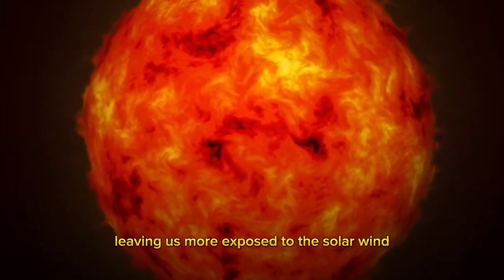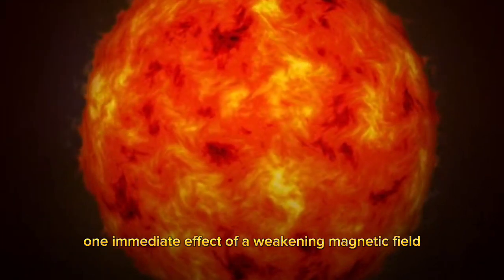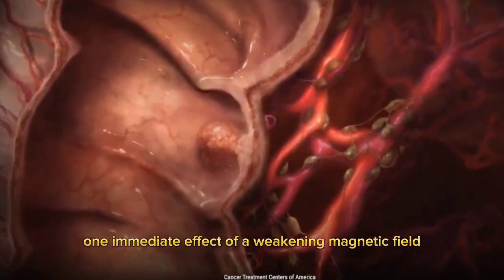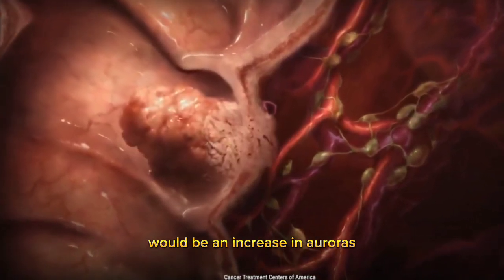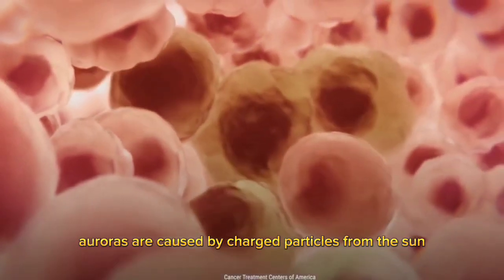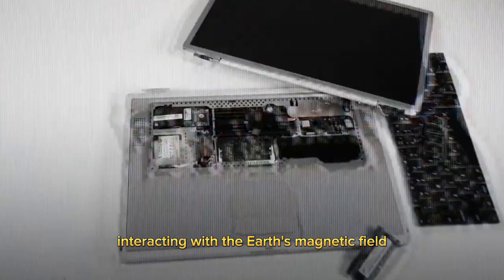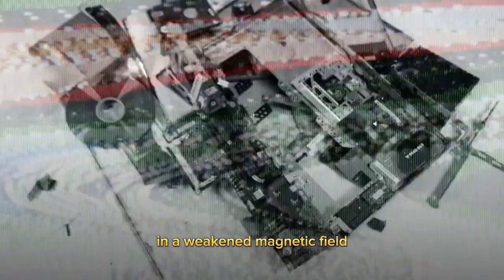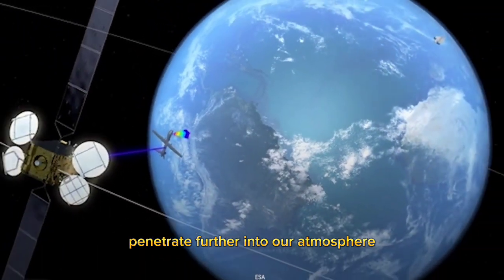One immediate effect of a weakening magnetic field would be an increase in auroras, those mesmerizing lights in the polar regions. Auroras are caused by charged particles from the sun interacting with the Earth's magnetic field. In a weakened magnetic field, these particles would be able to penetrate further into our atmosphere, resulting in more frequent and intense auroral displays.